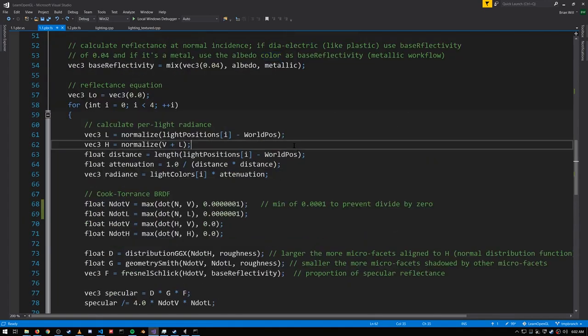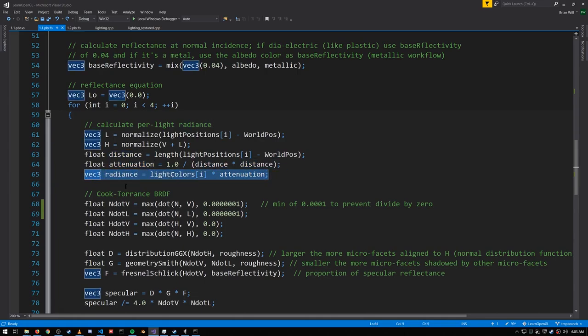Looking back at the loop, we're going to need the light vector L, the halfway bisecting vector. We compute the distance to the light, use that for our attenuation, and that gets us an input radiance value, a measure of light energy coming in from this light source. This all then gets fed into our bidirectional reflectance distribution function, which in this case is the Cook-Torrance BRDF.